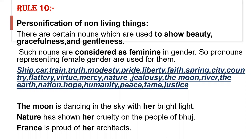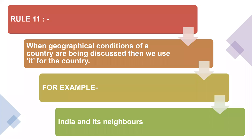When we talk about geographical conditions, we use 'it'. For example, 'India and its neighbors.' But 'France is proud of her architects' — here France is treated with feminine gender because it is related to gracefulness and beauty. When we talk about geographical conditions, we use 'it'.